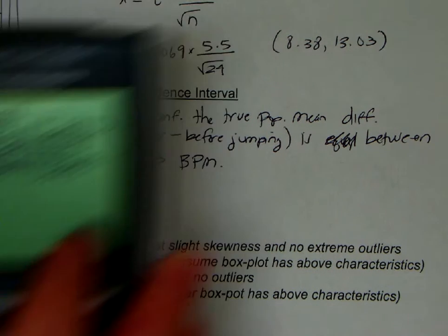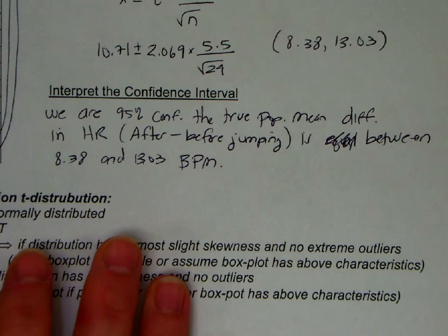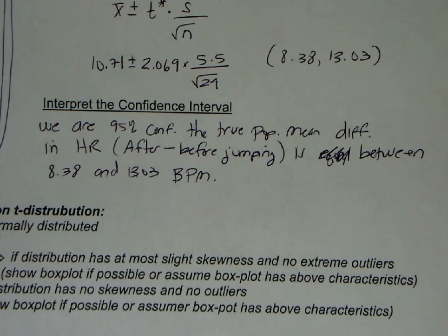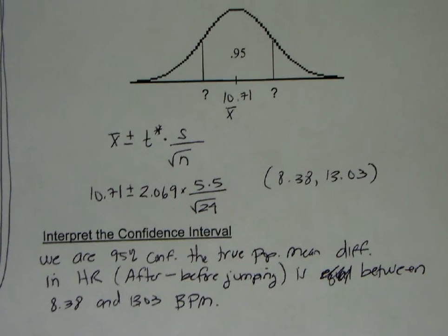Now I interpret it. I've already done this, I'm doing it again. We are 95% confident the true population mean difference in heart rate after minus before jumping is between 8.38 and 13.03 beats per minute. And there's your good old confidence interval.